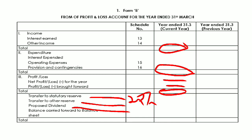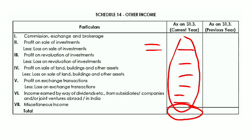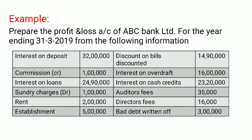Now we will discuss a practice problem. Prepare the Profit and Loss Account of ABC Limited for the year ending 31st March 2019 from the following information: interest on deposit, commission, interest on loan, sundry charges, rent, establishment charges, discount on bills, interest on overdraft, interest on cash credit, auditors fees, directors fees, and bad debts written off. We will classify each item into the correct schedule.